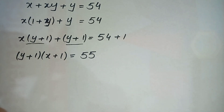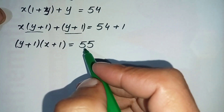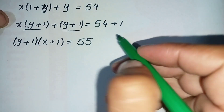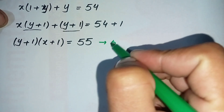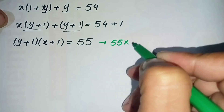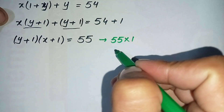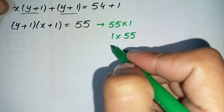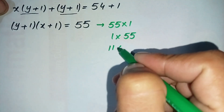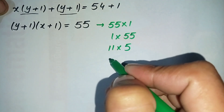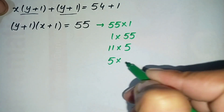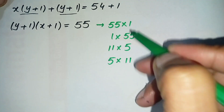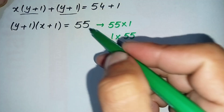Now we will find the factors of 55. The factor pairs of 55 are: 55 × 1 = 55, 1 × 55 = 55, 11 × 5 = 55, and 5 × 11 = 55. These are the four possible pairs of factors of 55.